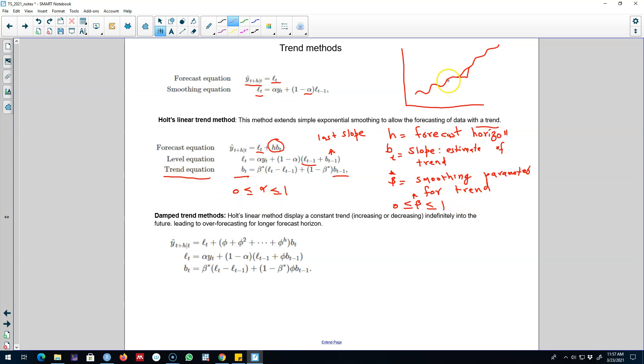And we'll include a smoothing parameter for the trend, and this smoothing parameter will control how much weight we want to assign to the slope and the change in the level.